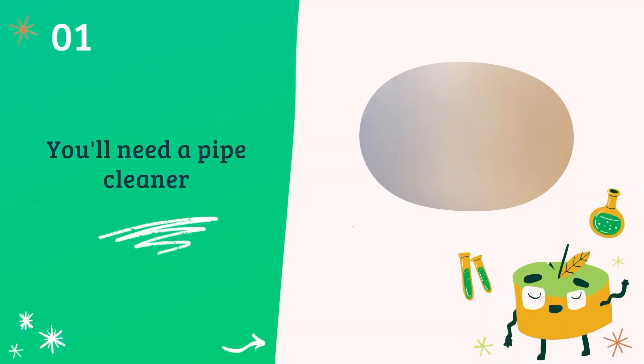First, we'll need a pipe cleaner. You can create any shape you like. It can be a simple scrunch or something more complex like your first initial. Have fun with it!